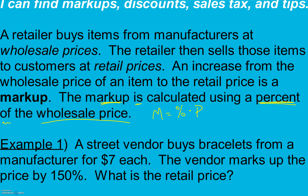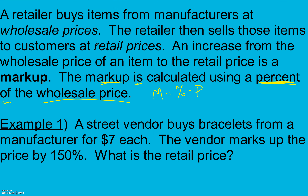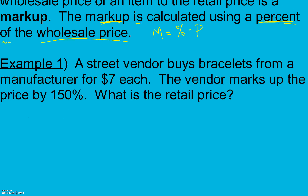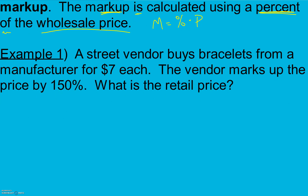A street vendor buys bracelets from a manufacturer for seven dollars each. The vendor marks up the price by 150 percent. What is the retail price? To find the retail price, the street vendor is going to make us pay the original seven dollars.